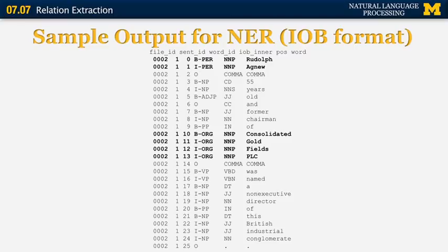As you can see the word Consolidated is labeled with a beginning symbol for organization and then the rest of the words in that organization Goldfields PLC are all labeled as I-org. Now, you can imagine that it's possible to perform named entity recognition in two steps. In the first step, we recognize that Consolidated Goldfields PLC is some sort of named entity and then we can use any standard classification method to determine what specific type of named entity it is.